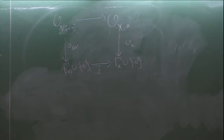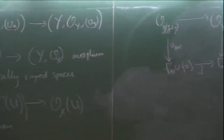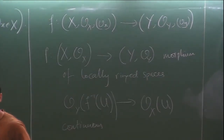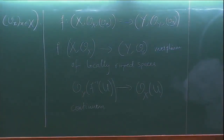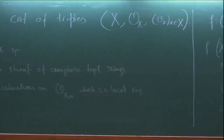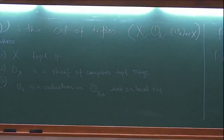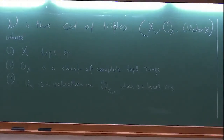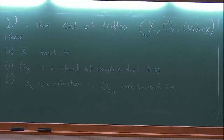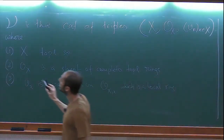O_X is a sheaf of complete topological rings, so O_X(U) is a complete topological ring for all U — this is built into the definition, exactly as in the case of spa. This is a lot of data, but we have seen all of it for the affinoid spaces. So then we can define a general adic space.